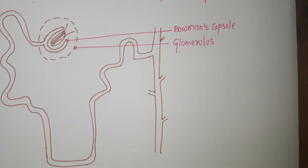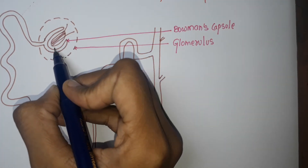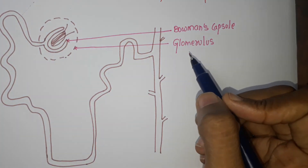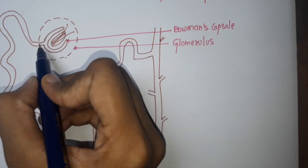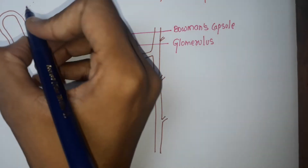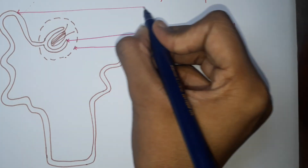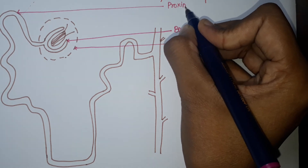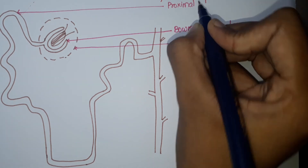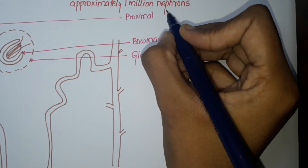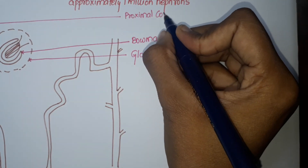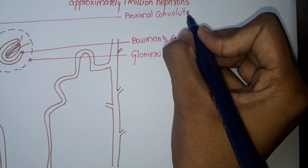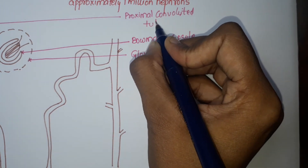After drawing the Bowman's capsule and glomerulus, it will move here — this is the proximal convoluted tubule.